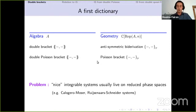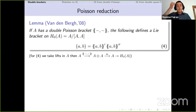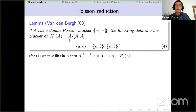This gives a first dictionary: a double bracket is the non-commutative version of an antisymmetric biderivation, and a double Poisson bracket corresponds to a Poisson bracket. For integrable systems, the problem is that nice phase spaces usually arise from Hamiltonian reduction. Van den Bergh showed that there is another property: if you take the double bracket of two elements, you get an element in A⊗A. You can multiply that to get an element in your algebra, and then push it into H₀(A) — the vector space obtained from A by setting all commutators to zero. Under this operation, you get a Lie bracket on this vector space.